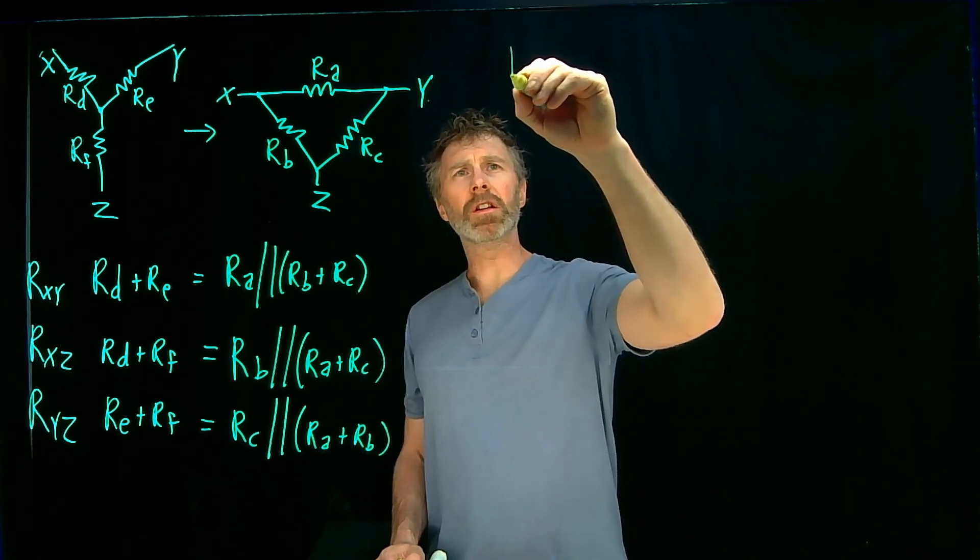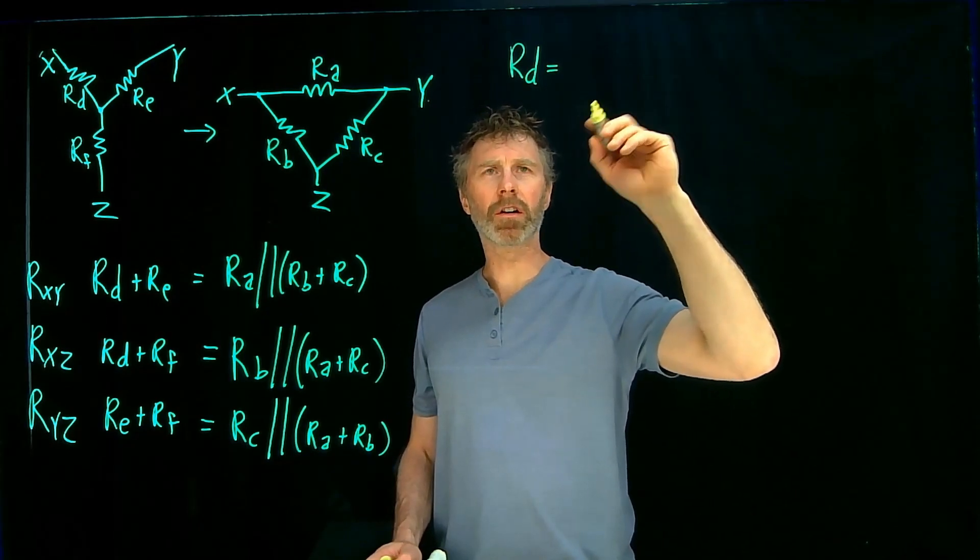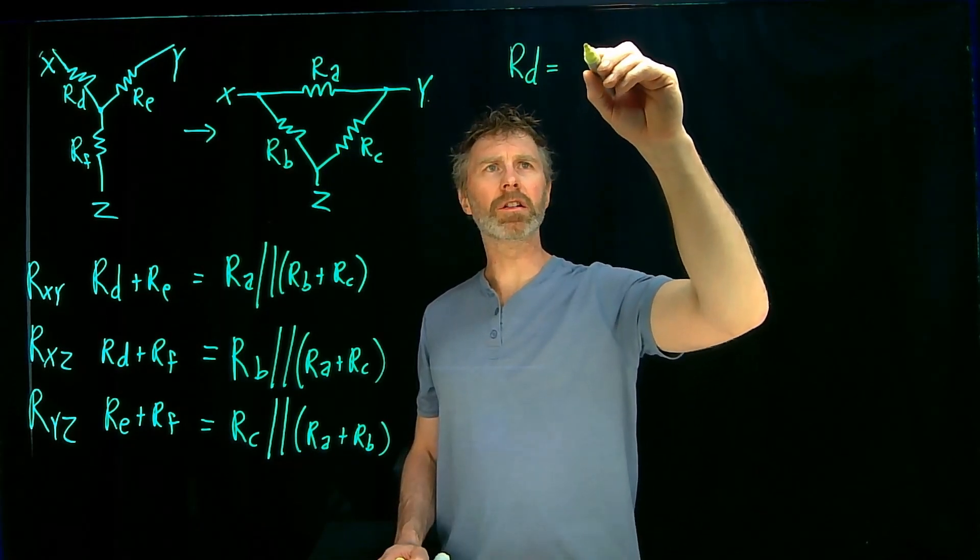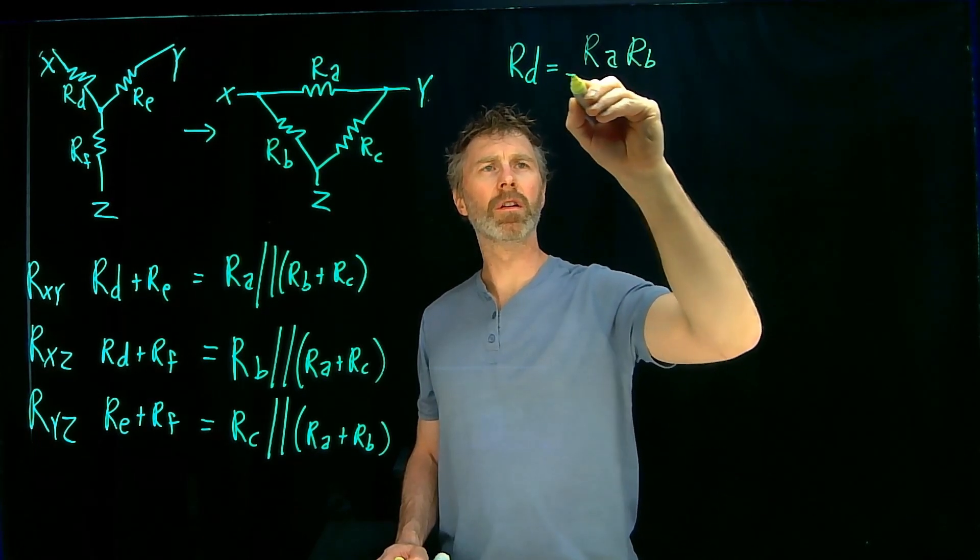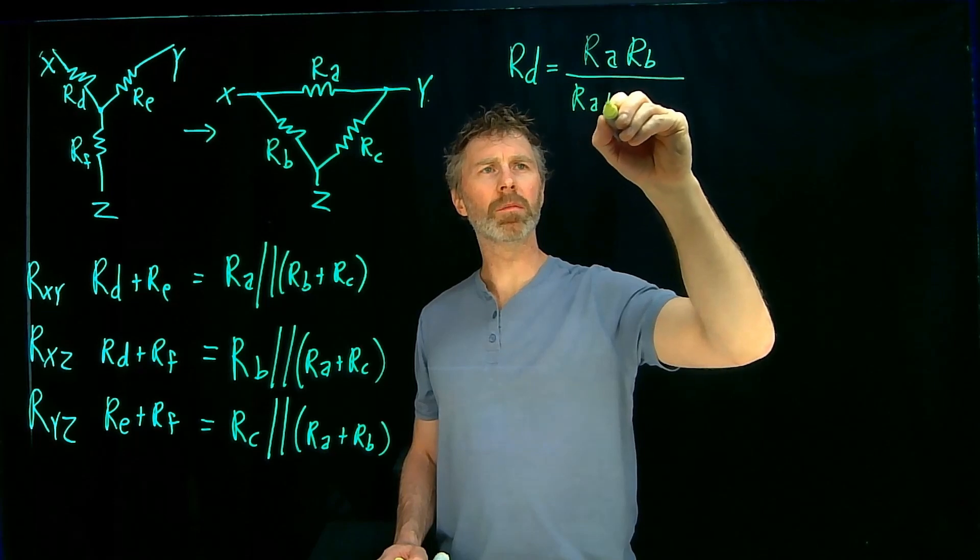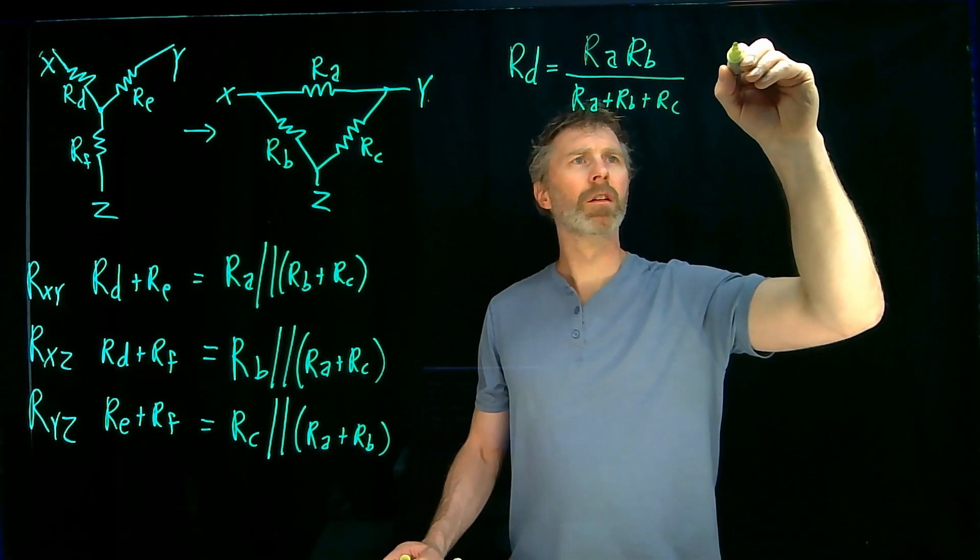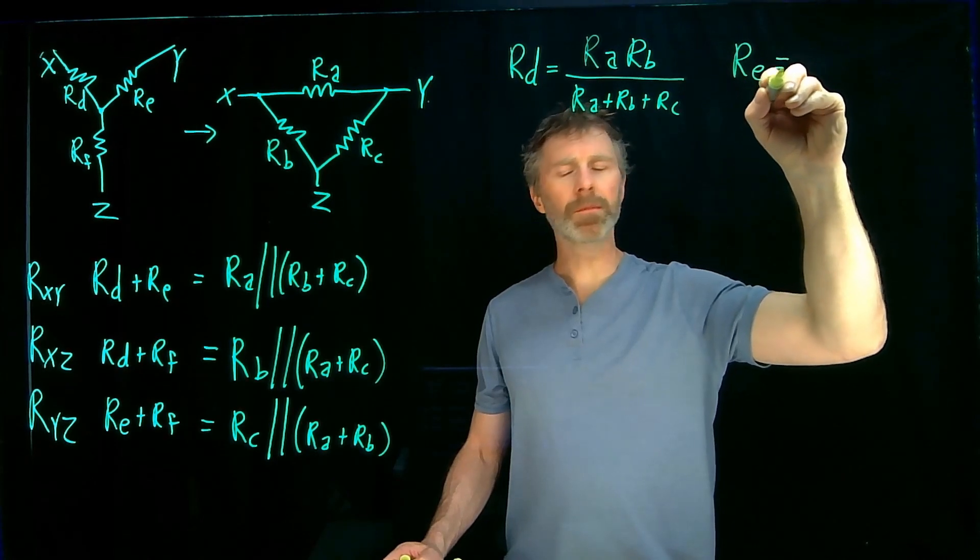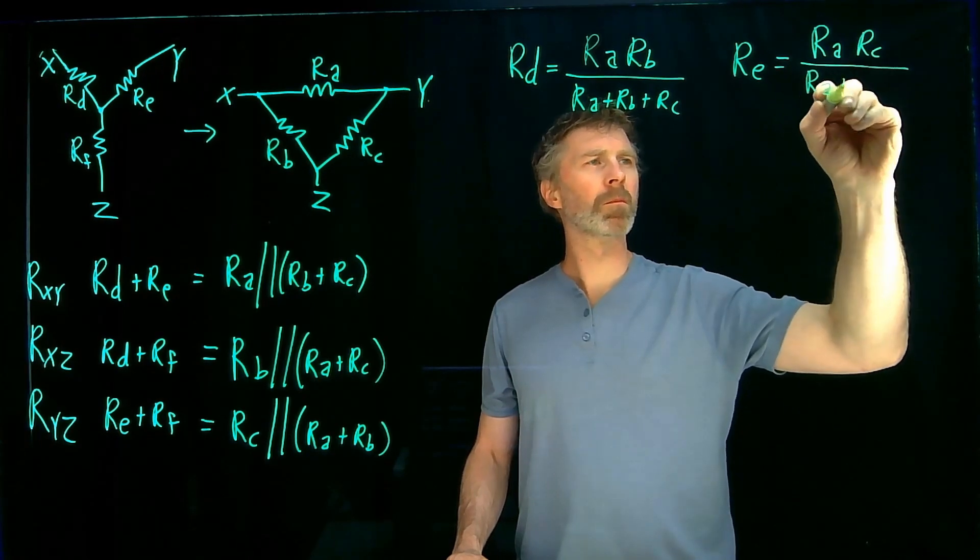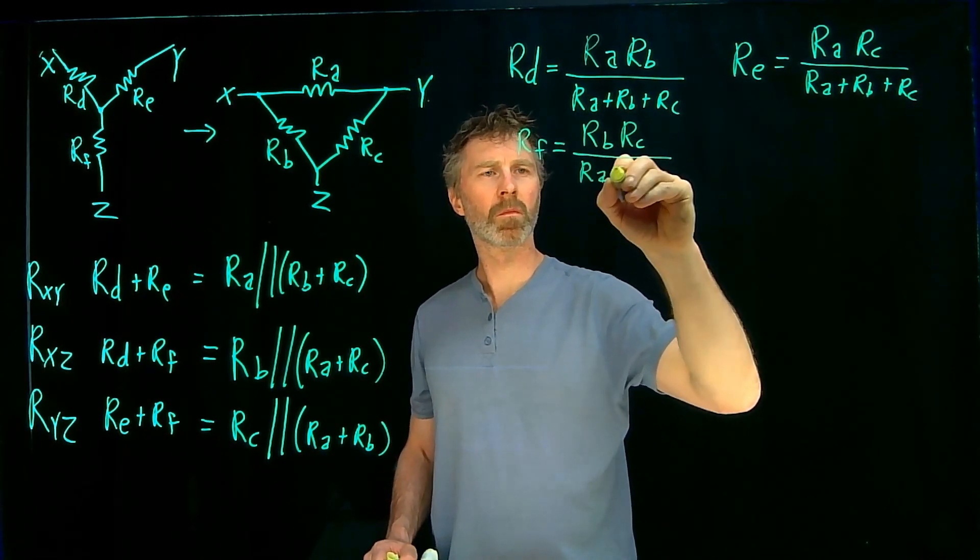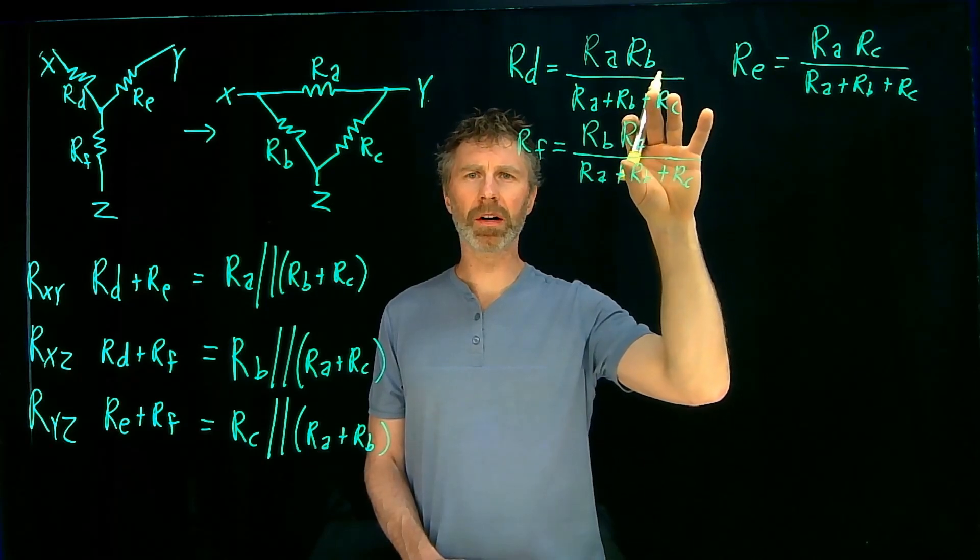I just had to fix the camera. I think it was bumped, so it wasn't actually showing the full screen. All right, so from that video, I came up with equations for RD and RE and RF. And RD is RA, RB over RA plus RB plus RC. So those are my three equations from the delta to Y conversions.